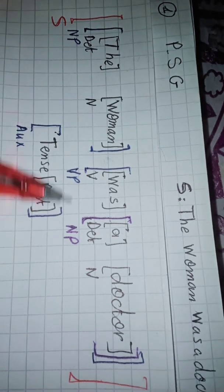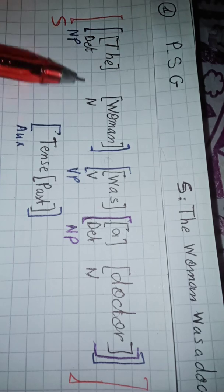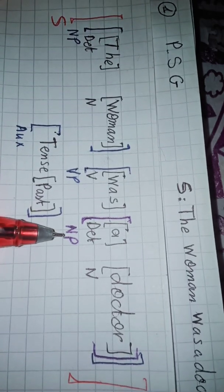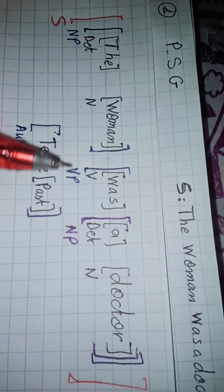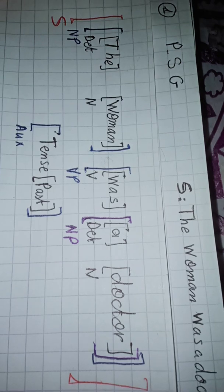And we have here two noun phrases. The first noun phrase, which is the subject of our verb, and our second noun phrase, which is the subject complement. But here in phrase structure grammar, we don't mention functions, we only mention forms. OK, so let's move to the second step.